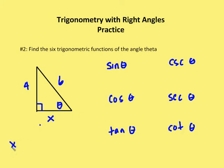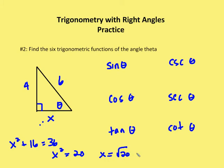We know that x squared plus 16 (4 squared) is equal to 36. So x squared is going to be equal to 20, and x is equal to the square root of 20. I can simplify that further by saying x is equal to 2 root 5. Now that I know x is 2 root 5, I can go through the process of evaluating the trig functions.